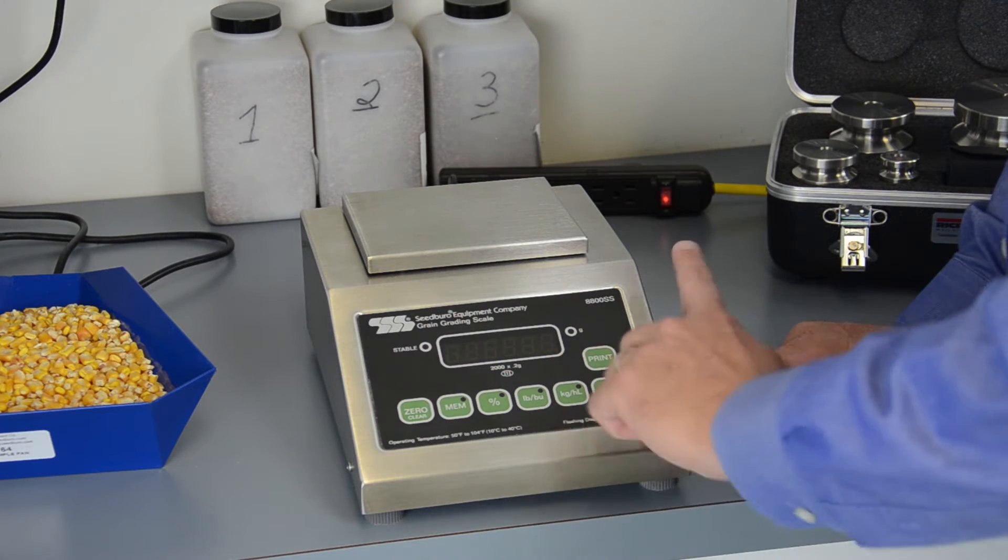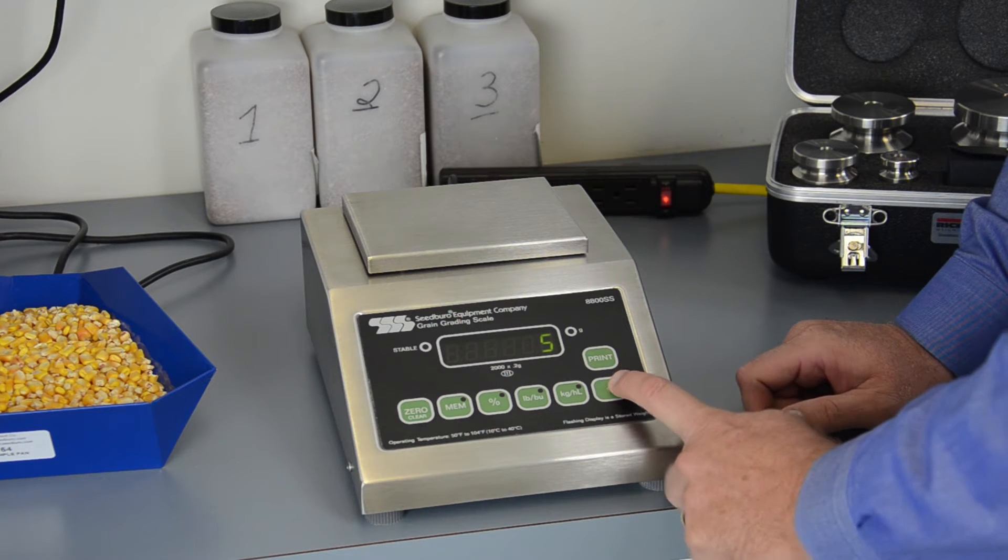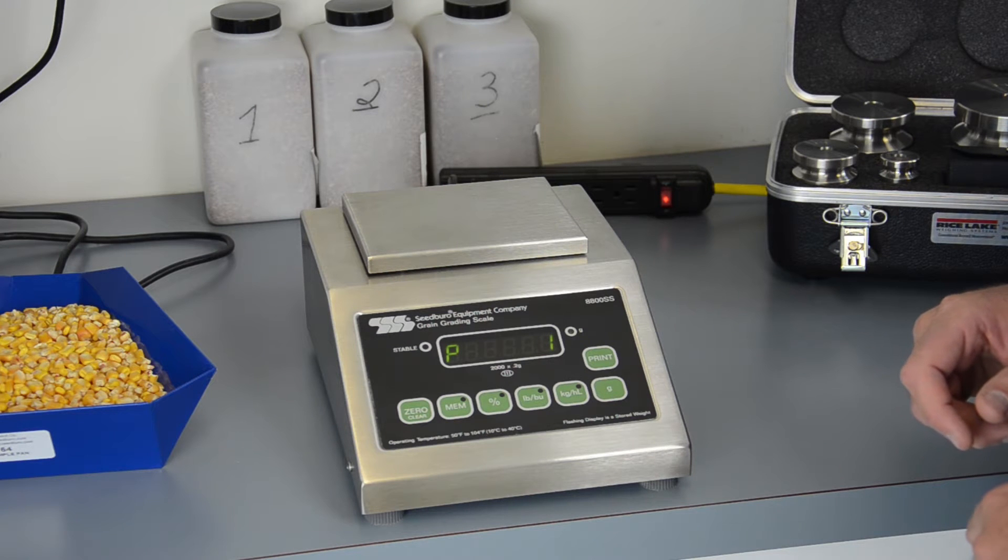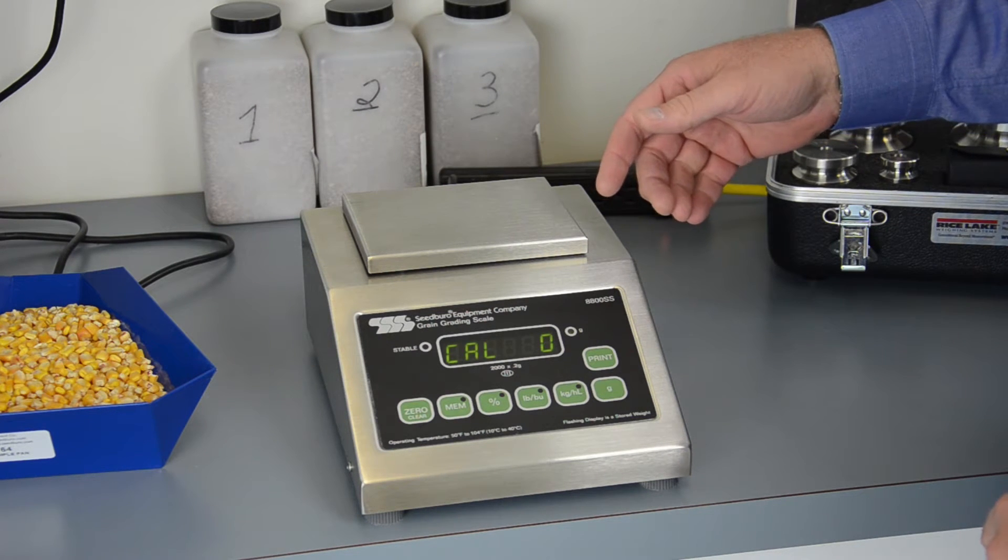It'll go blank, and you then push zero five times. It will show how many times, and then push the gram button. At this point, the instrument will go through the calibration process and set up for calibration.